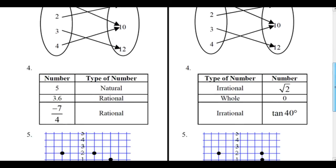All right, what else do we have here? Number 5, it's natural. 3.6 is rational, -7/4 is rational. Irrational, √2, whole 0, irrational, tan 40. So notice we have two irrationals here.